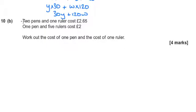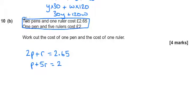Part B says two pens and one ruler costs £2.65. So if we did 2P plus one ruler, R, is equal to £2.65. One pen and five rulers cost £2. This is simultaneous equations. As soon as it starts telling you things like this, it should be screaming out to you, simultaneous equations.